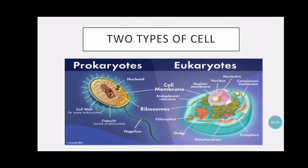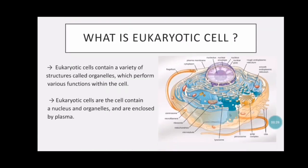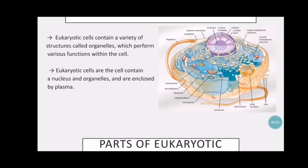In cells, there are two types: the prokaryotic cell and the eukaryotic cell. Eukaryotic cells contain a variety of structures called organelles, which perform various functions within the cell. Eukaryotic cells are cells containing a nucleus and organelles, and are enclosed by a plasma membrane.